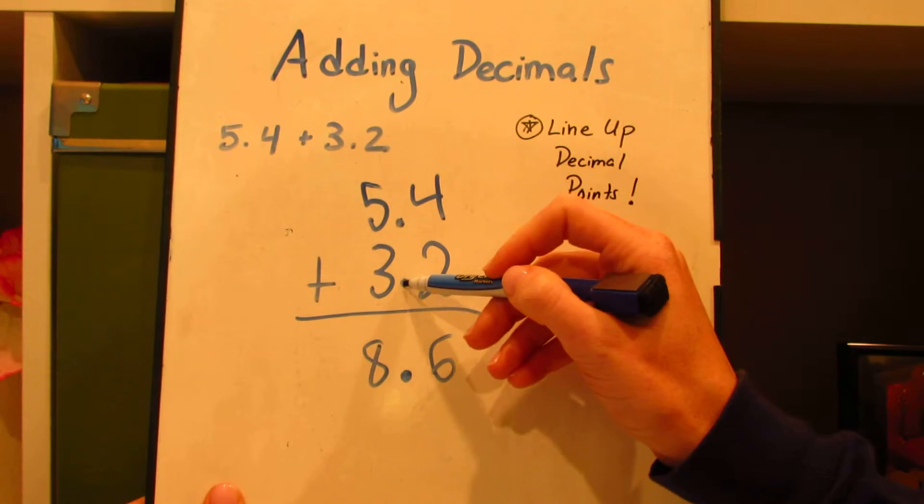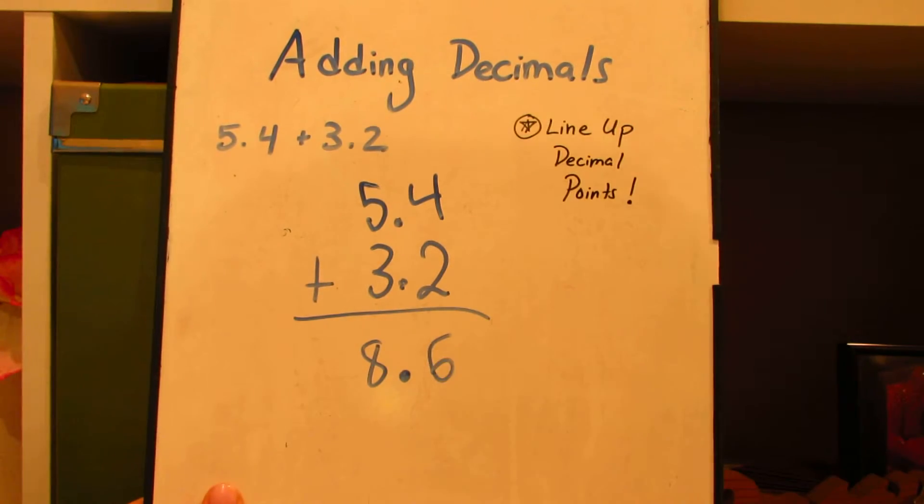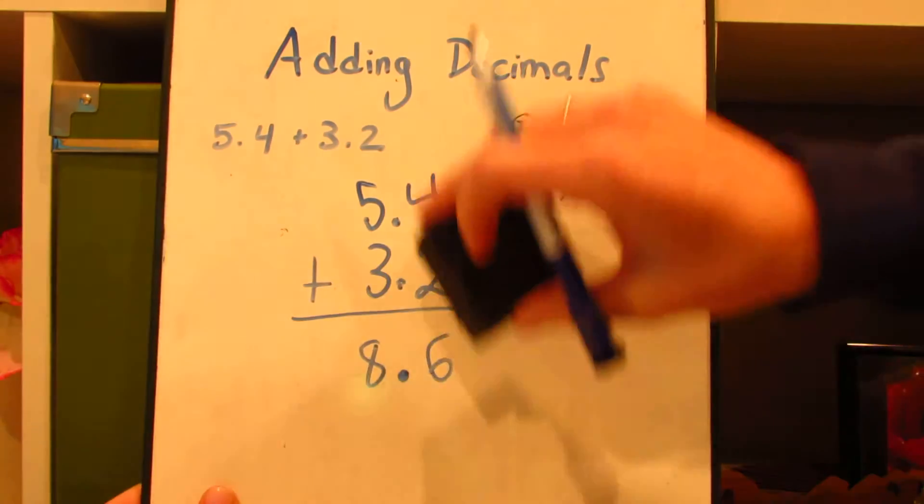So 5 and 4 tenths, 3 and 2 tenths, 8 and 6 tenths. Final answer is 8 and 6 tenths. Let's try another one.